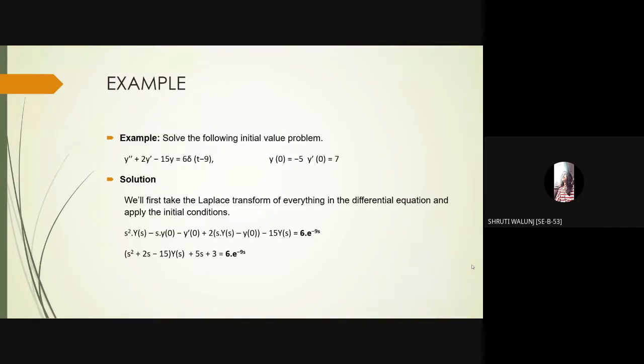Solution: We will first take the Laplace transform of everything in the differential equation and apply the initial conditions. s square into y of s minus s into y of 0 minus y dash of 0 plus 2 into s into y of s minus y of 0 minus 15y of s is equal to 6 into e raised to minus 9s. Solving this equation, we get s square plus 2s minus 15y of s plus 5s plus 3 equal to 6 into e raised to minus 9s.